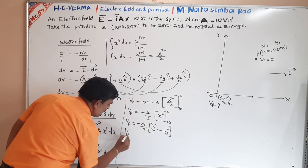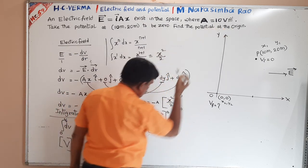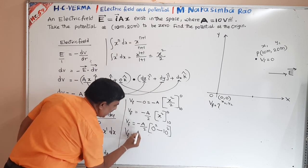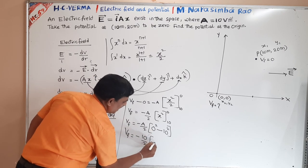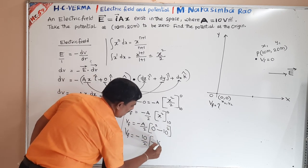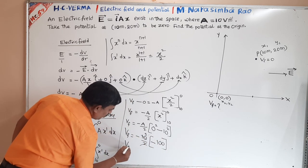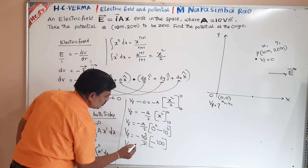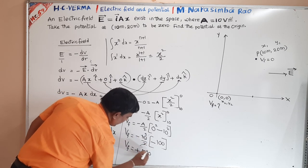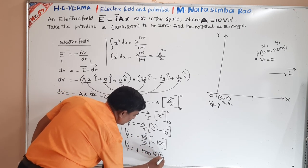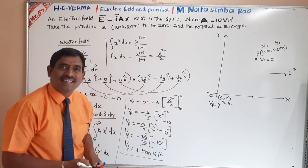A value is given as 10 volt per meter. So final potential equals minus 10 by 2 times (0 minus 100). That is minus 5 times minus 100, which gives 500 volt. The potential at the origin is 500 volt.